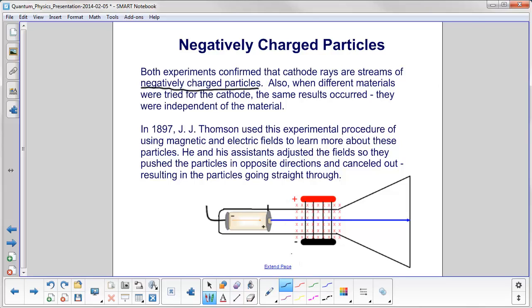Also, a good physicist, a good chemist, a good scientist tries different setups to see if there are other factors involved. So different materials were tried for the cathode, you've got the same results.